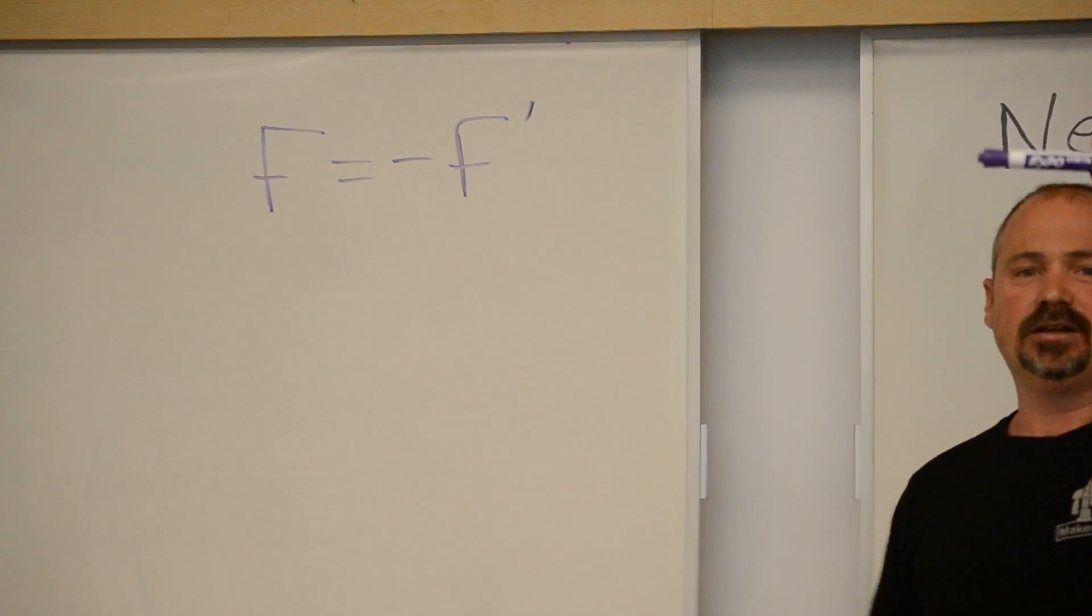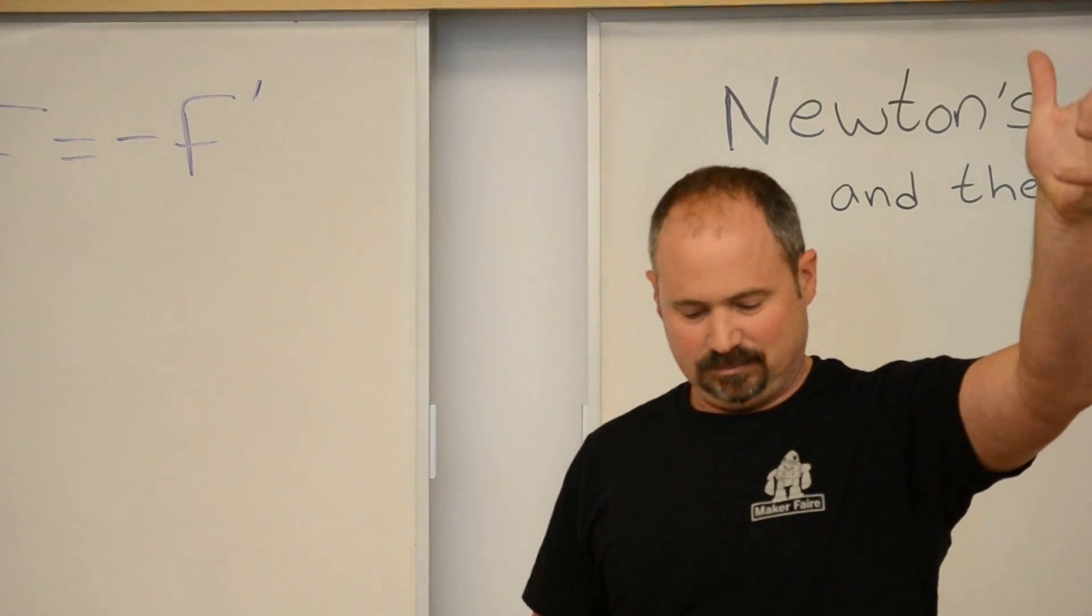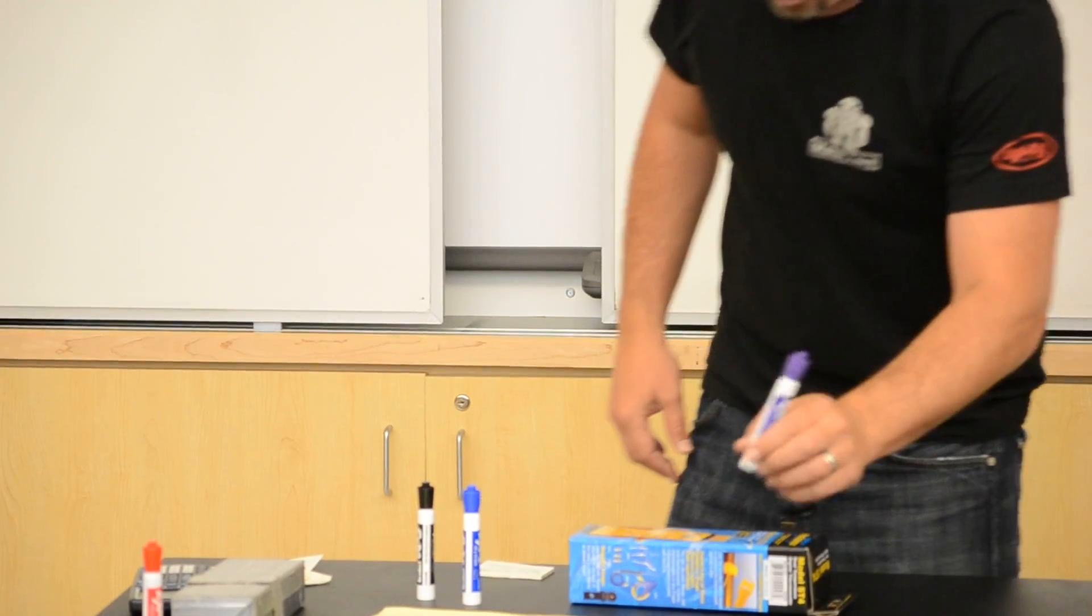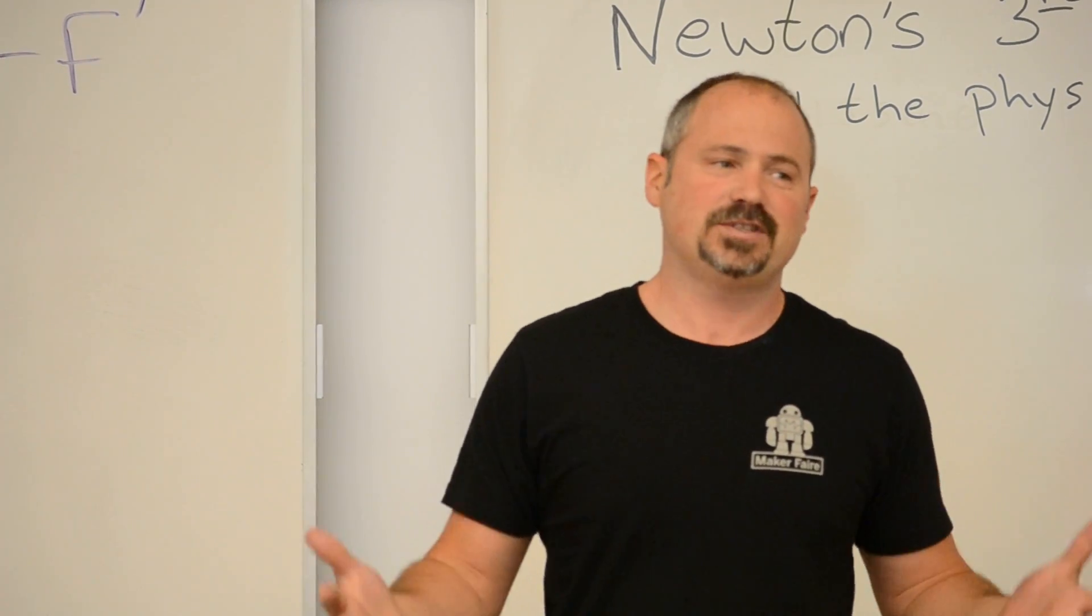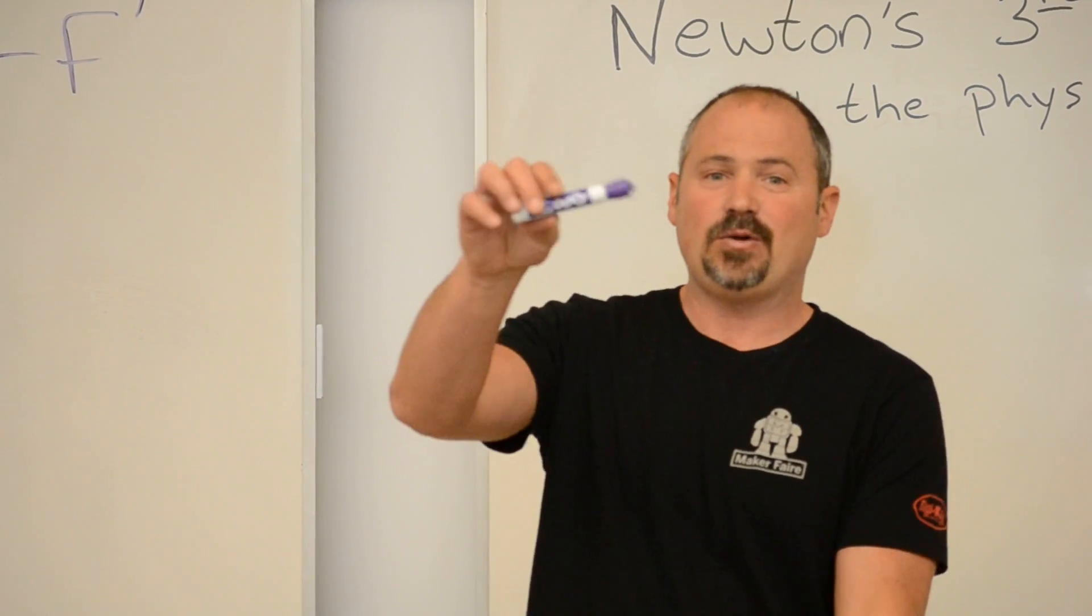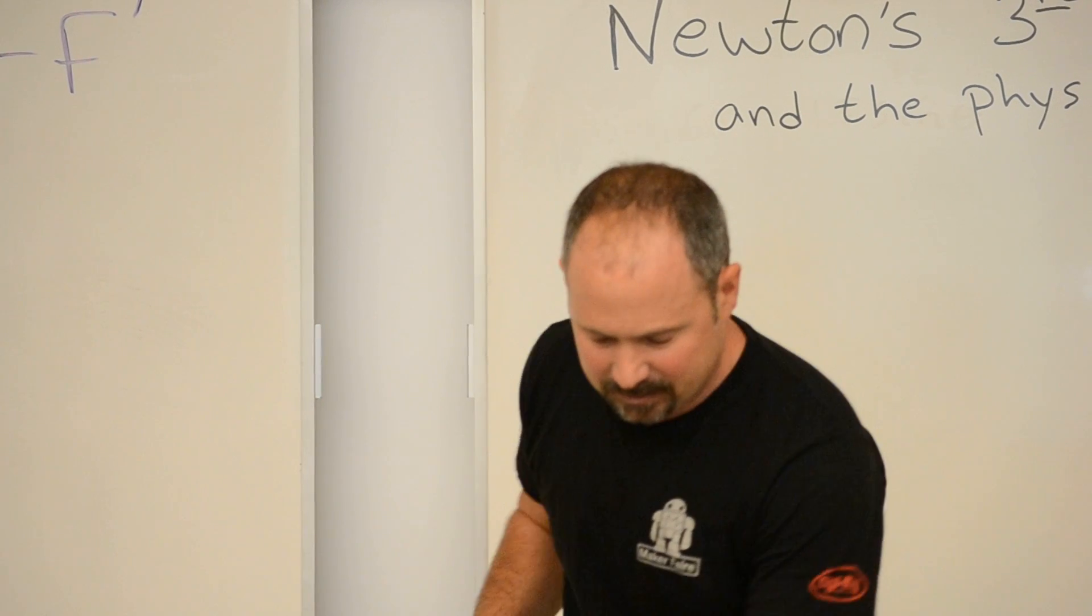let's just take this pen and I'll just drop it. It accelerates and hits the table. In order for an object to accelerate, there has to be a net force on that object. What is the force that caused the acceleration? It's obvious. Gravity. Gravity pulls the pen down.